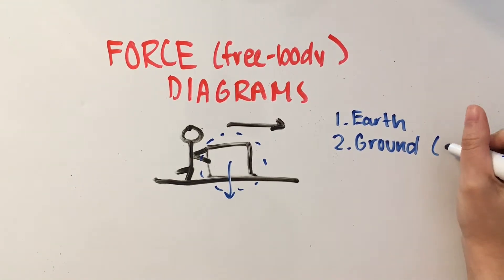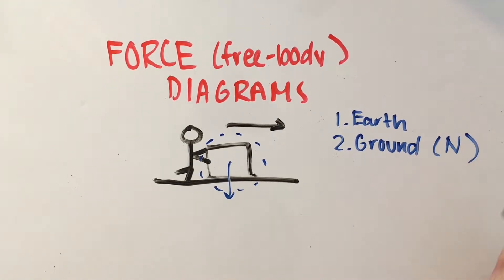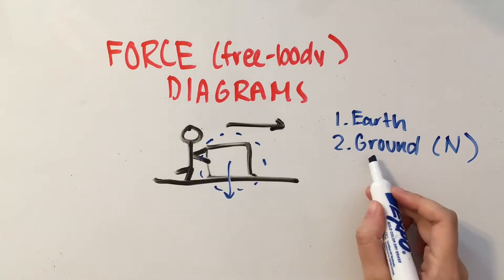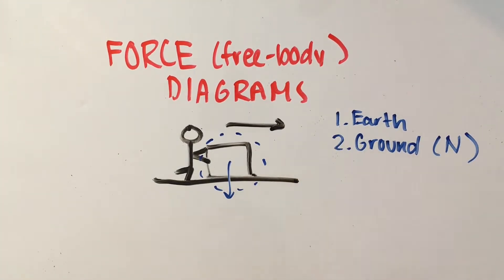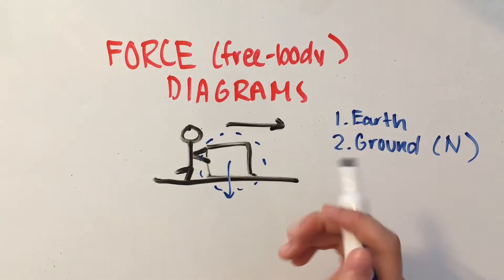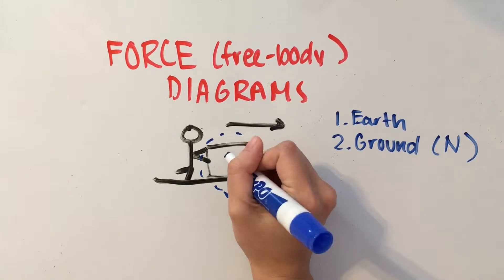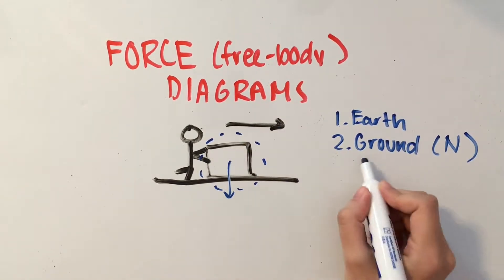We are going to denote this with a capital N, which is basically saying that our ground is going to exert a normal force on the box. Now that doesn't mean that this force is common, it just means that the normal force is perpendicular to the ground.